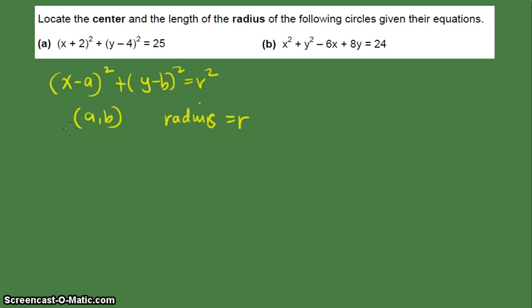So for letter a, this is easy, it should be negative 2 and for the y value it should be 4. So notice how we get the value from x plus 2, so the center is negative 2 and for y minus 4, we have the y value equals 4.